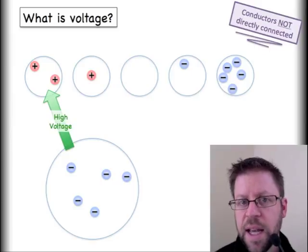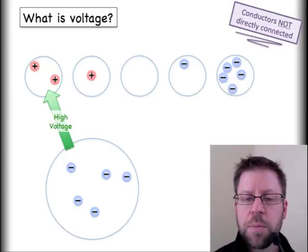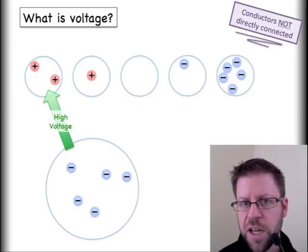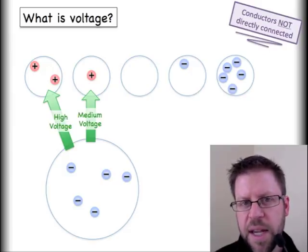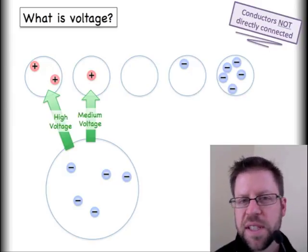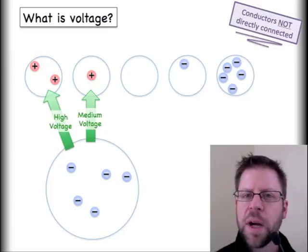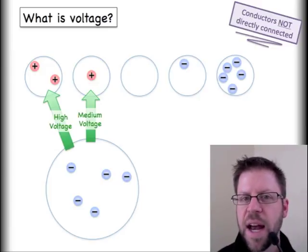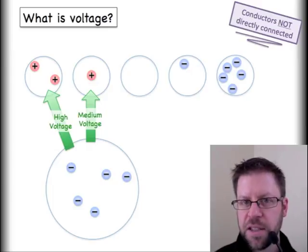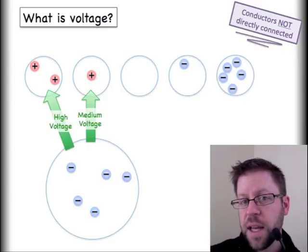The electrons in the big sphere down below would like to be able to get over to this other location because they're attracted to it, because there are a lot of positive charges over there. And in fact, it's doubly so because they're repelled by the charge that's around them with the other negative charges.